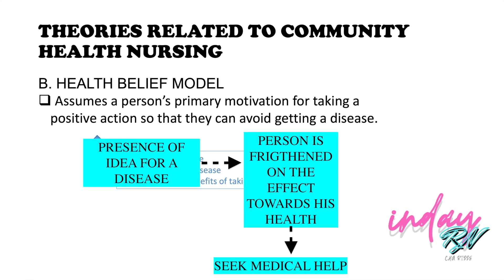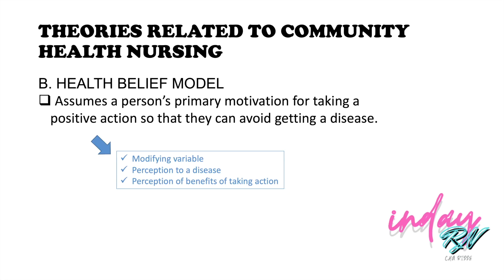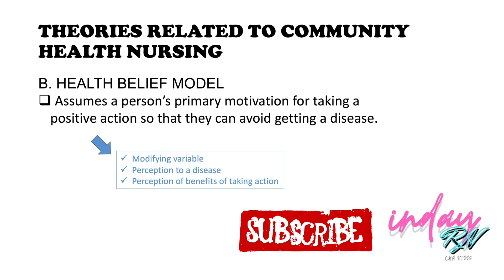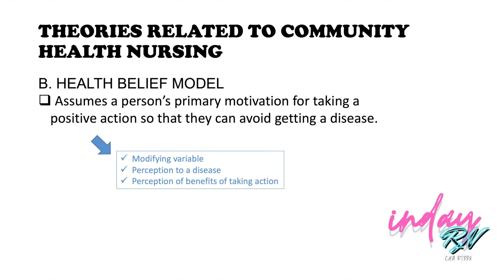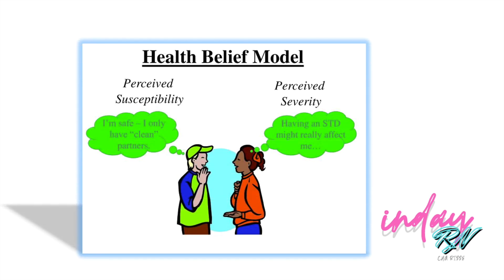The Health Belief Model is based on the belief that an individual frightened by the idea of disease will be prompted to seek out preventive care services based on the benefits it provides. For example, in the Health Belief Model: Person A says 'I'm safe, I only have clean partners,' perceiving low susceptibility to sexually transmitted disease and preventing it accordingly. Perceived severity means a person recognizes how having an STD might really affect their life.